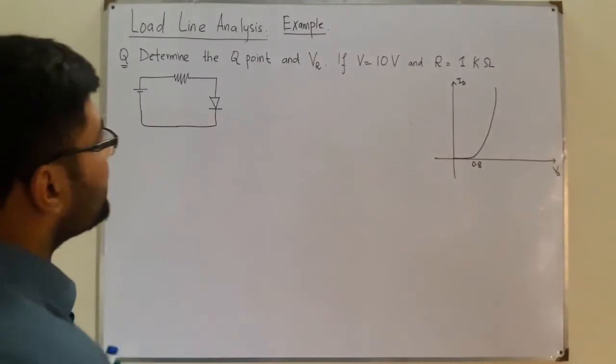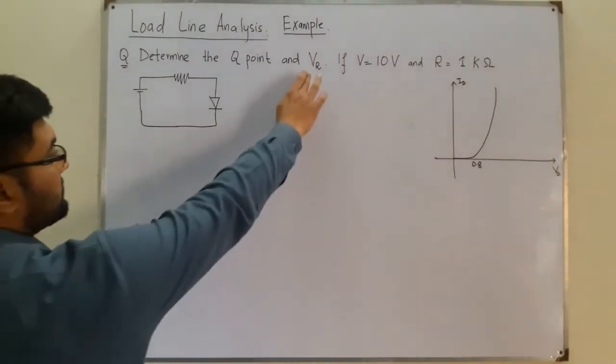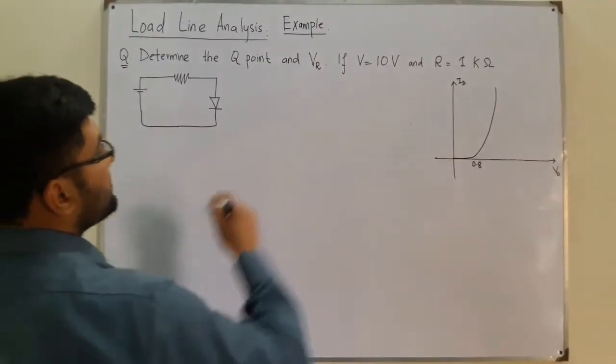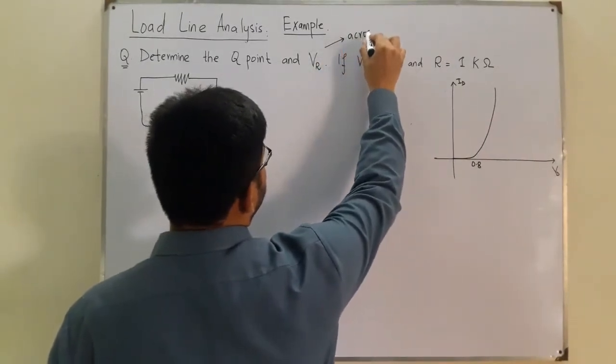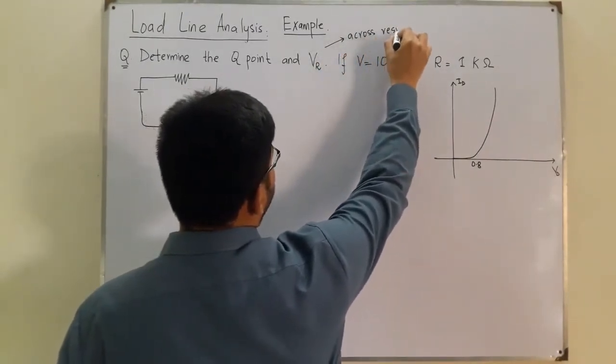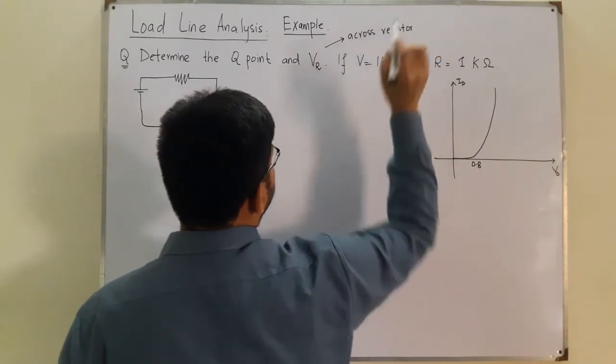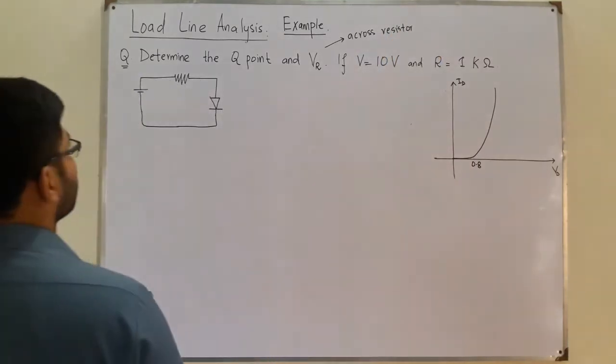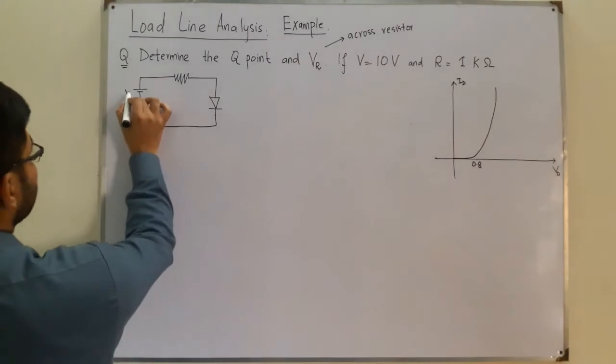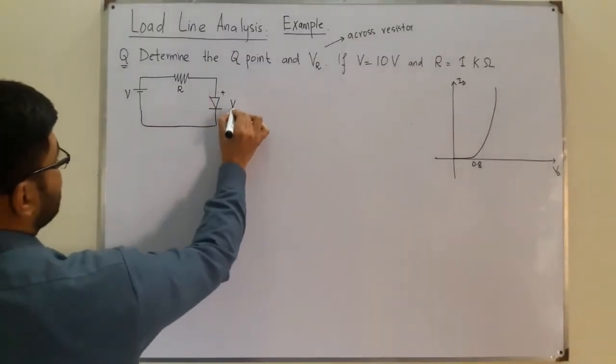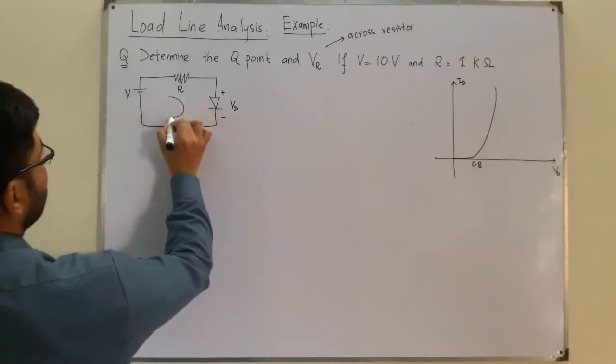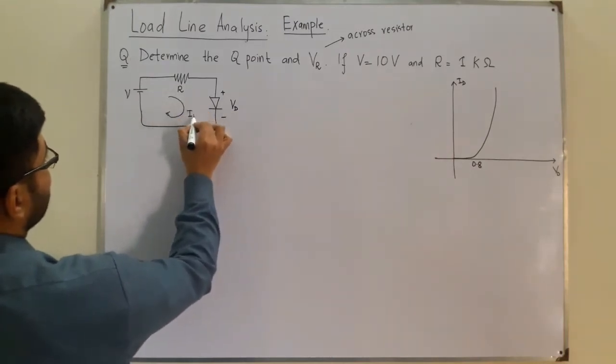We're also determining the voltage across the resistor. Let me write this - voltage across resistor. The values are given: VB from here we can calculate. So this is V, this is R, this is voltage across the diode VD, and the current flowing is ID.